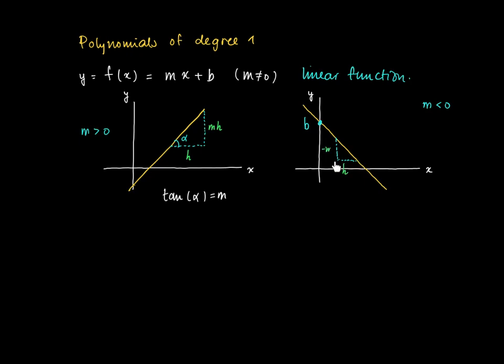If we take a step h to the left, we go up by -mh because h is now negative. Suppose we have x₁ and y₁ given on a line. Can we now find an equation of the line?